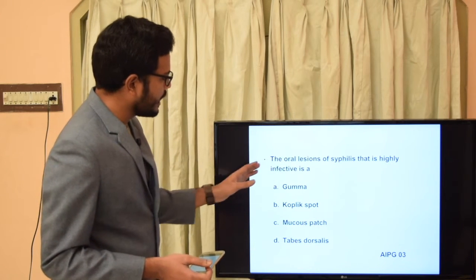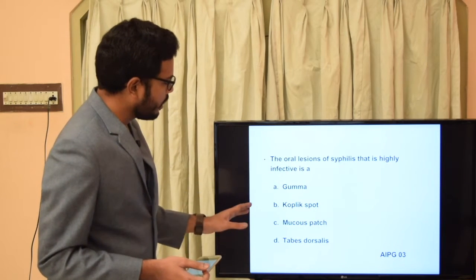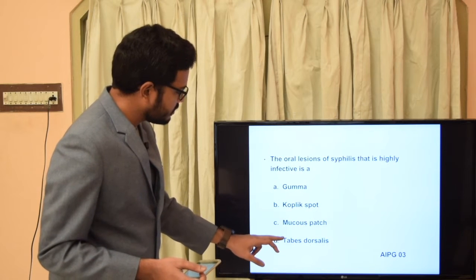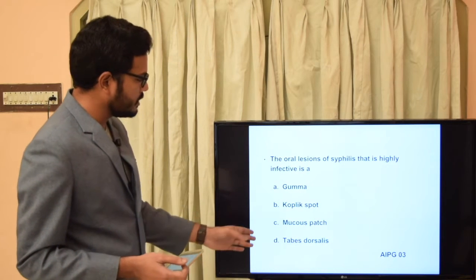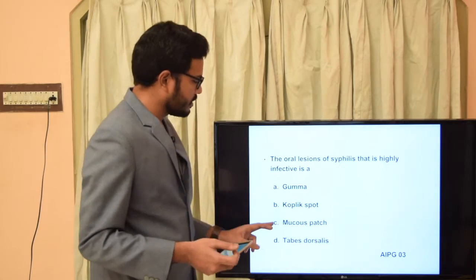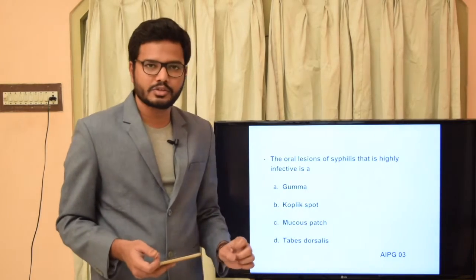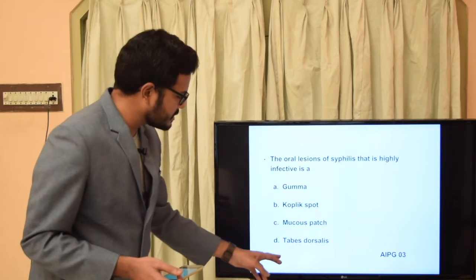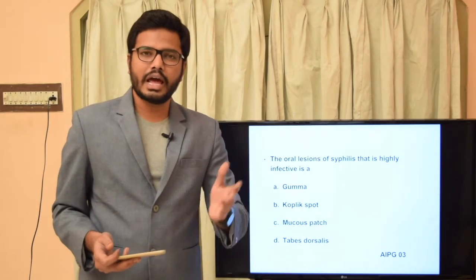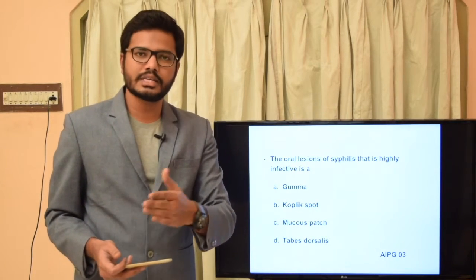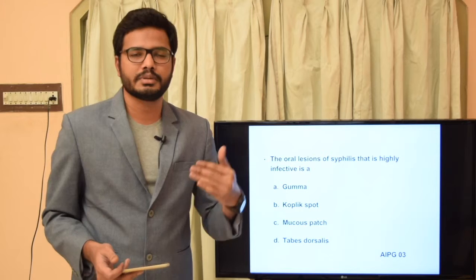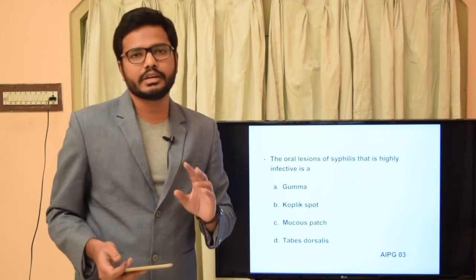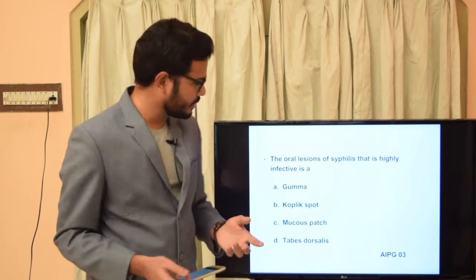The options are: gumma, Koplik spots, mucous patches, and tabes dorsalis. Mucous patches fall under secondary syphilis, making them the appropriate answer. Tabes dorsalis is the slow, gradual degeneration of nerves and fibers in the spinal cord, usually seen in untreated cases of syphilis.